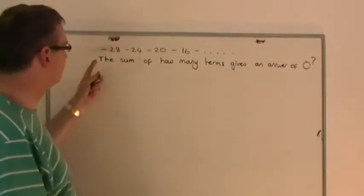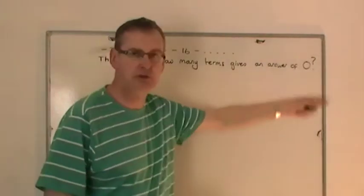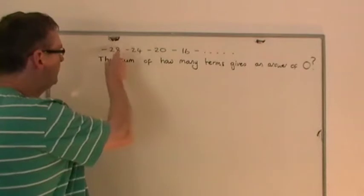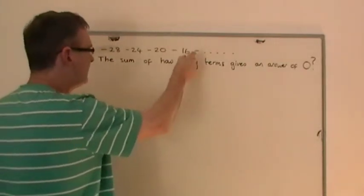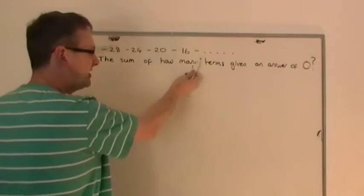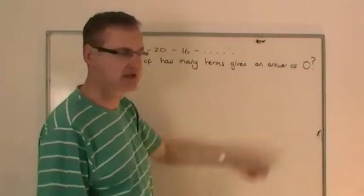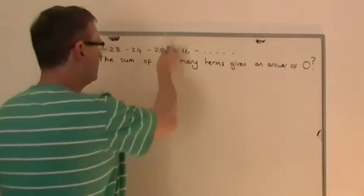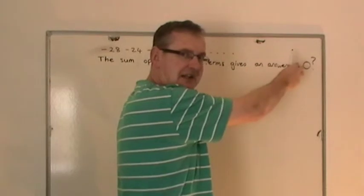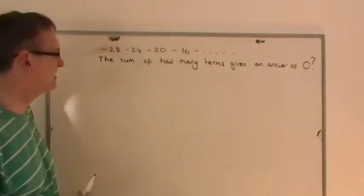And it's asking us: the sum of how many terms gives an answer of zero? In other words, when you add these up initially, they're obviously going to get more and more negative. But because you can see they are rising by four each time, there's going to be a certain point in time where the numbers that you're adding actually start becoming positive, because you're still adding four each time.